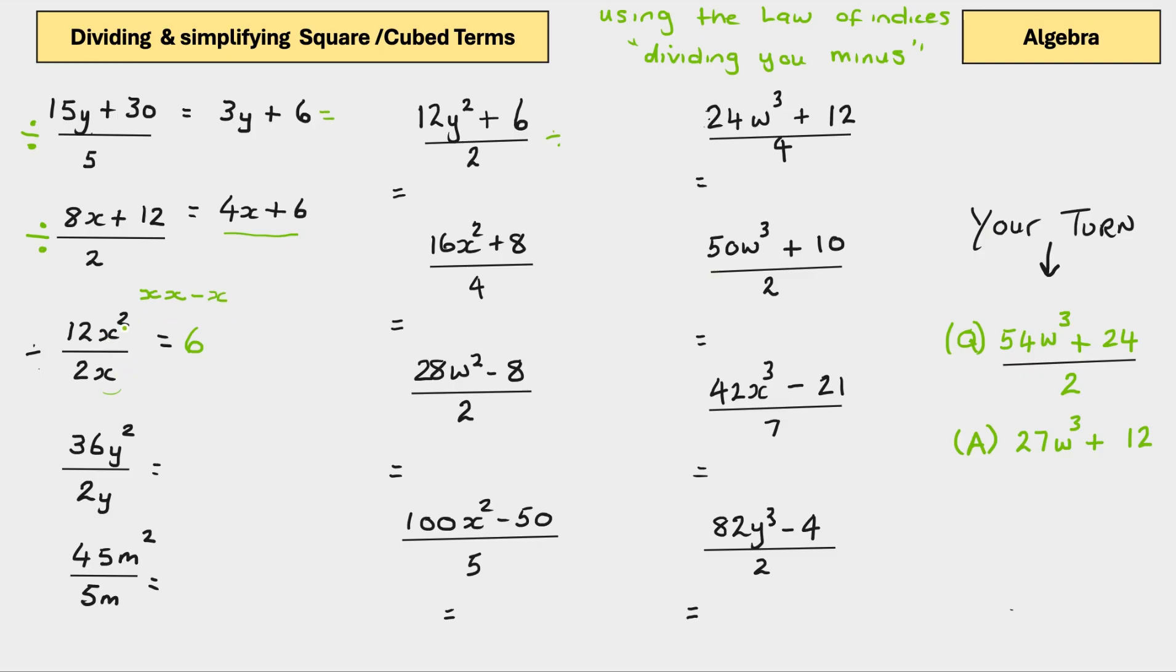So, it's 2x's here. Using the rule of indices here, divide, it's subtract, and then what we've got at the bottom, which is 1x. So, that leaves us with 1x. Therefore, we've got 6x. That's the answer.